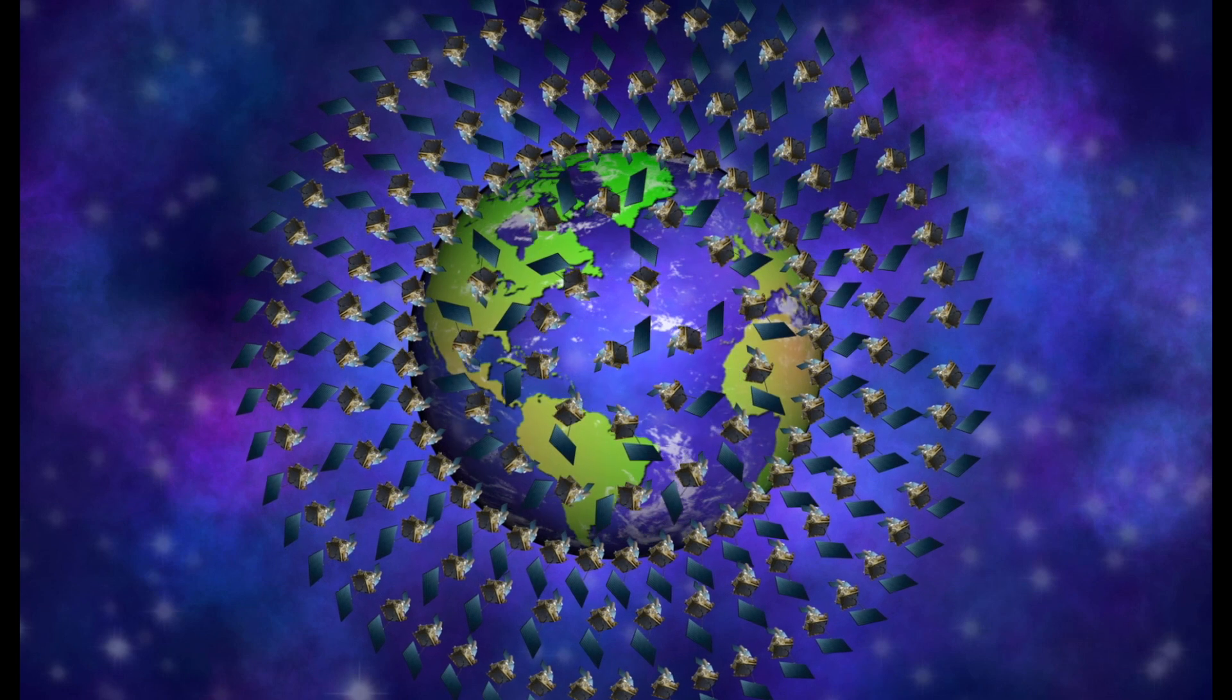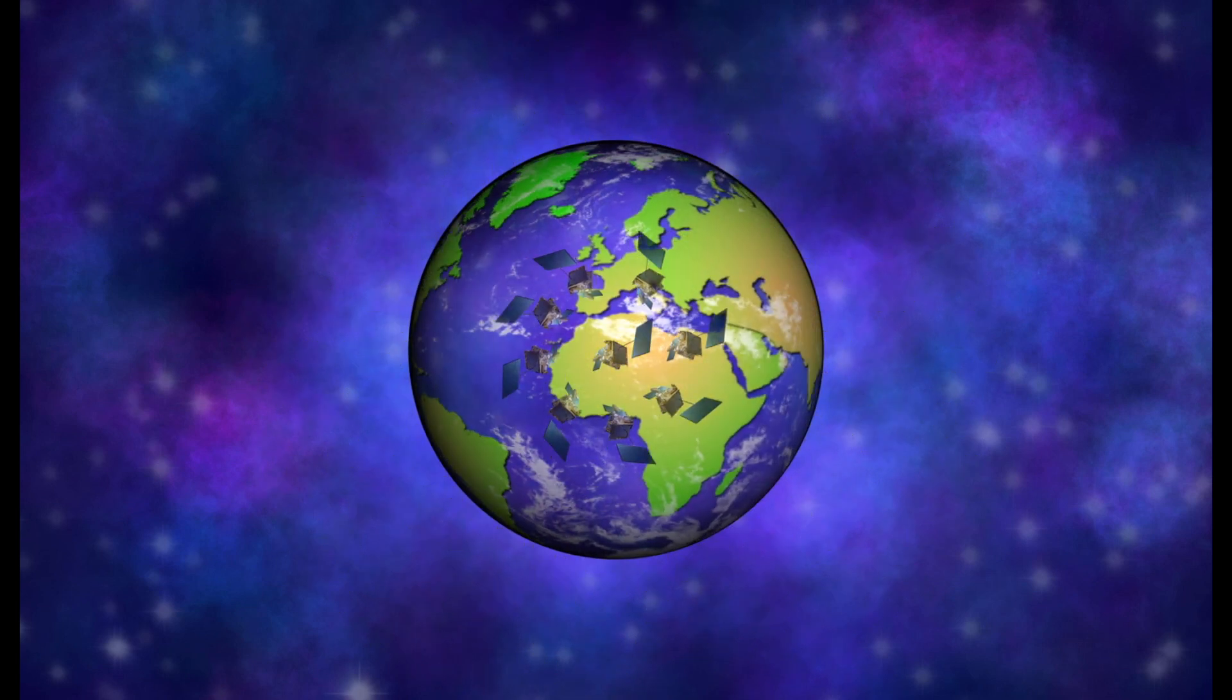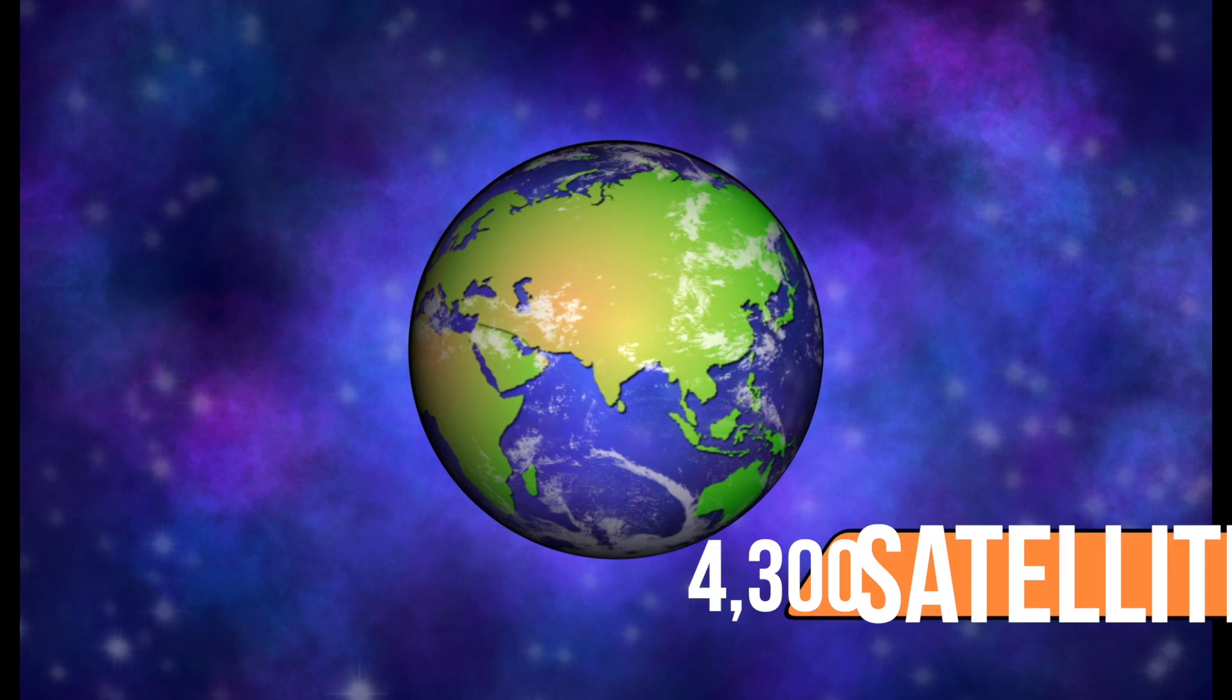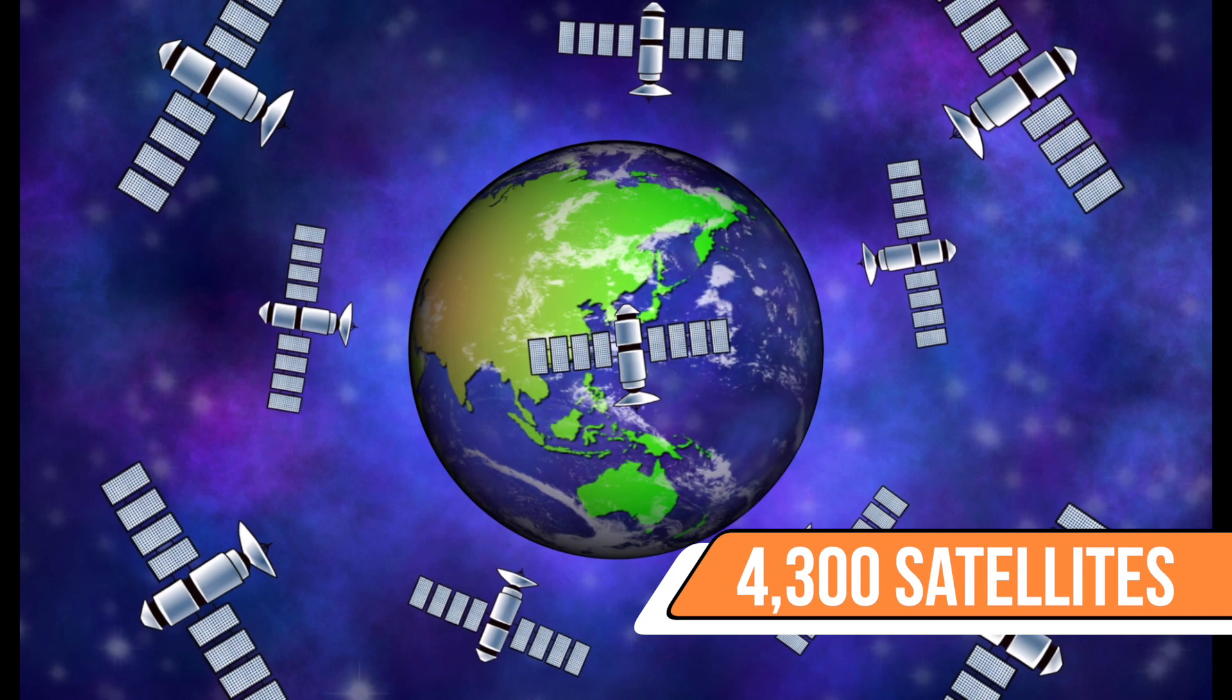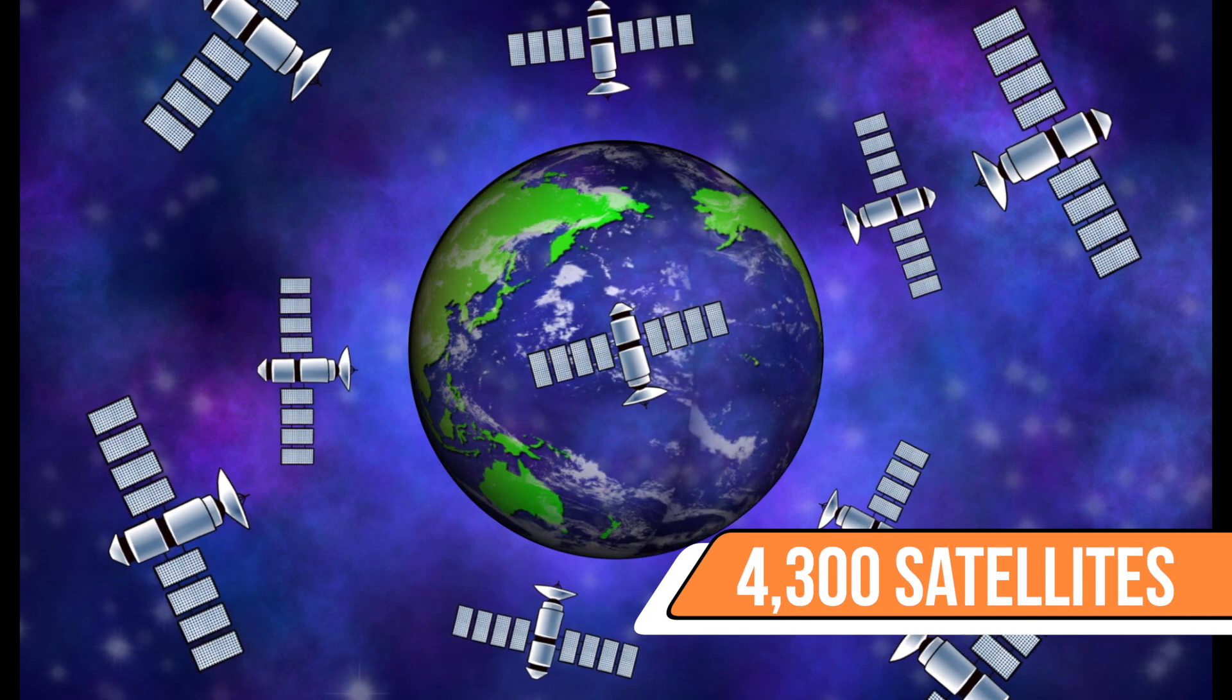To put into context just how many satellites we're talking about, consider that there are currently only around 4,300 active artificial satellites in orbit around Earth.